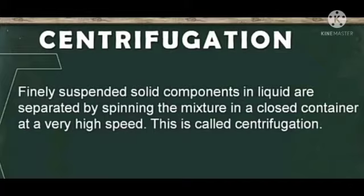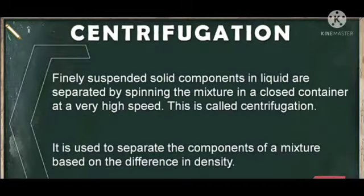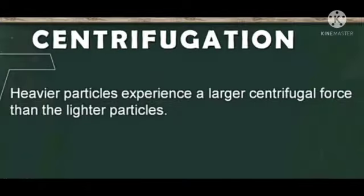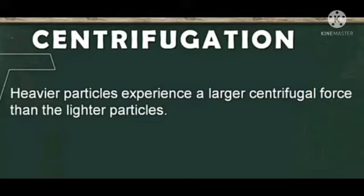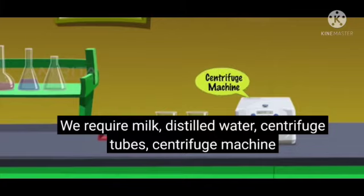The next method is centrifugation. Finely suspended solid components in a liquid are separated by spinning the mixture in a closed container at very high speed — this is called centrifugation. It is used to separate the components of a mixture based on the difference in density. Heavier particles experience a larger centrifugal force than lighter particles. For centrifugation we require milk, distilled water, and centrifuge tubes and a centrifuge machine.